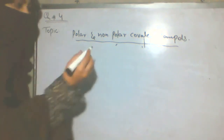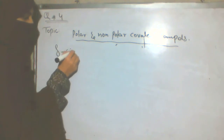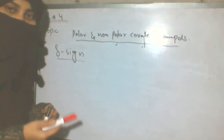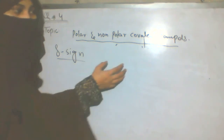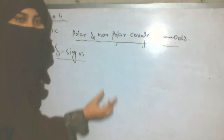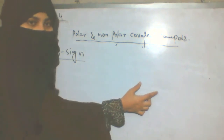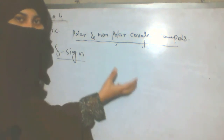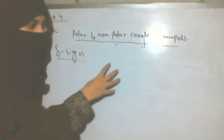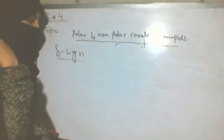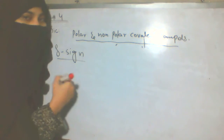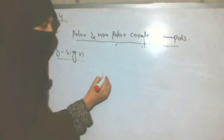Next, I will tell you about the delta sign. What is the delta sign? This is a very important short question. We ask: What are polar compounds? Give an example. What are non-polar compounds? Give an example. Differentiate between polar and non-polar covalent compounds and give examples.